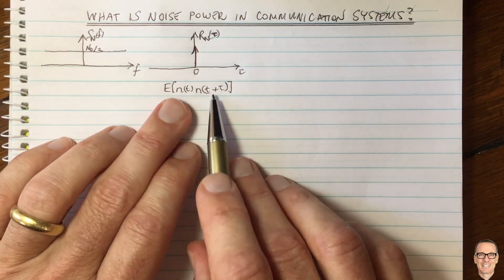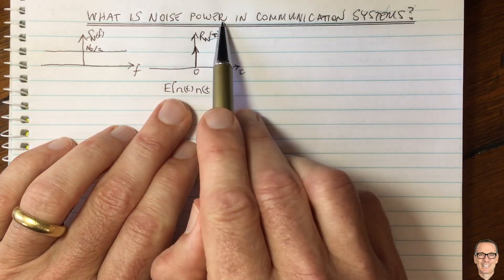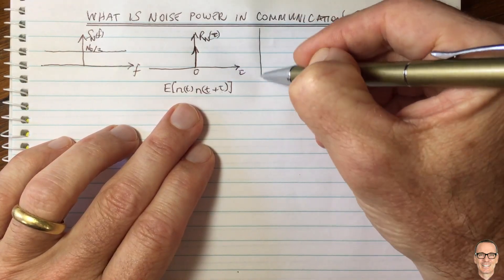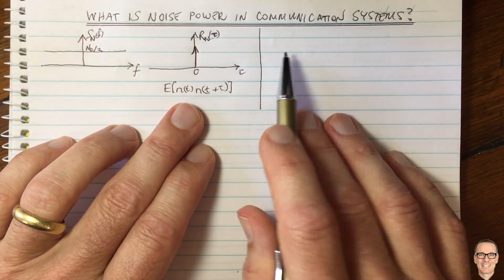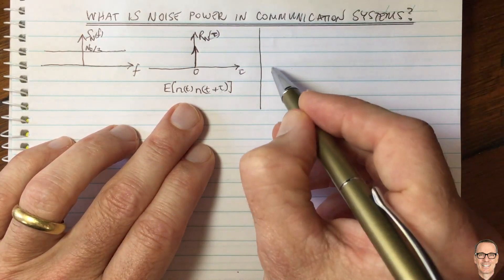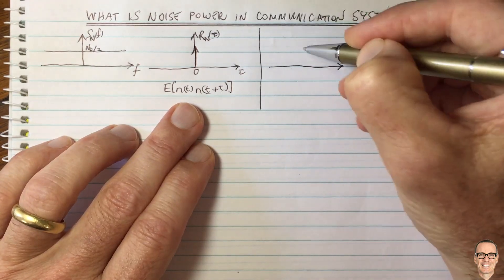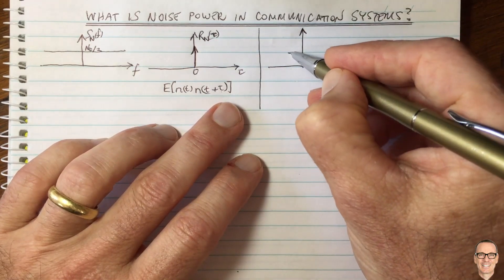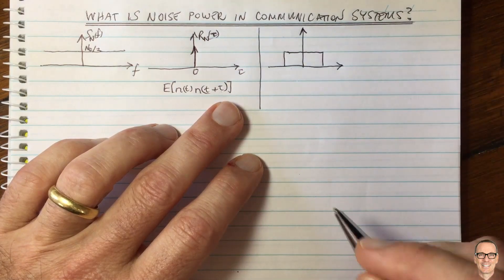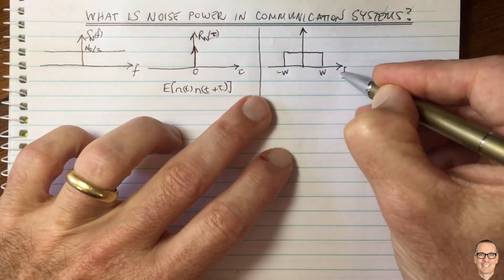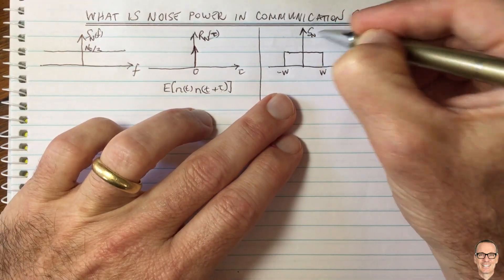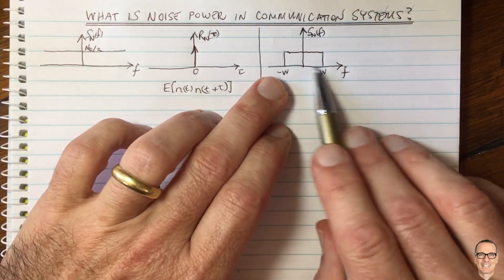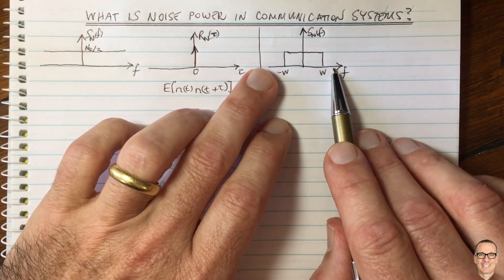What does this mean in terms of noise power, which is important for signal-to-noise ratios? First, consider the bandwidth-limited case. On the right-hand side, we have the noise after it's gone through a band-pass or low-pass filter. There's a bandwidth limitation — label this as bandwidth W, spanning from minus W to W in the frequency domain. The noise power spectral density under bandwidth constraint is flat across the spectrum of interest but zero outside that spectrum.